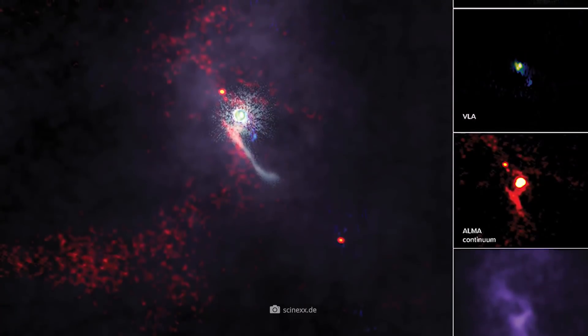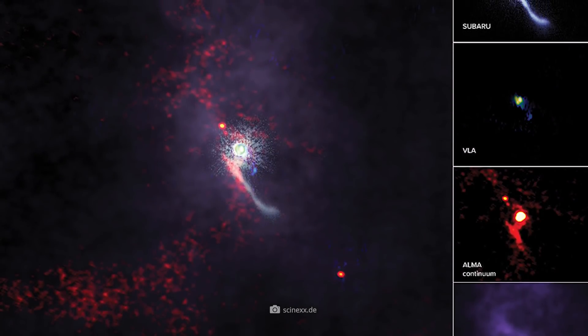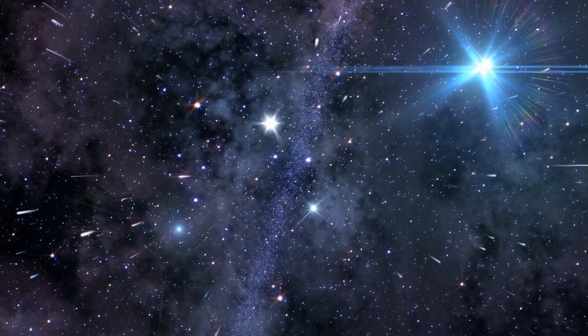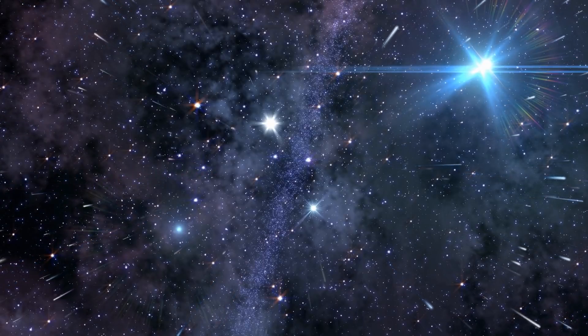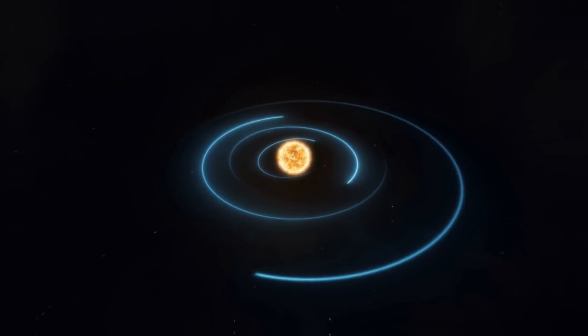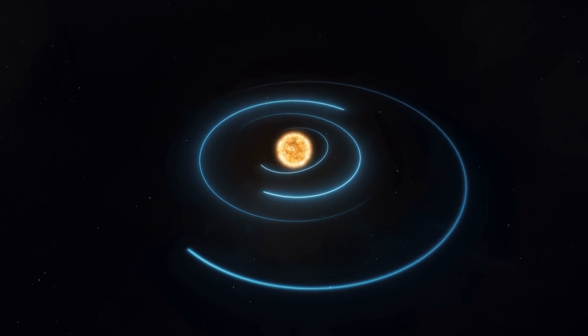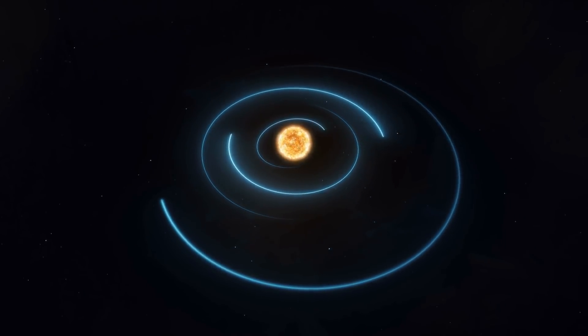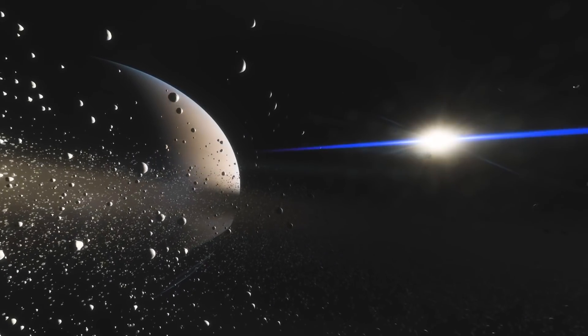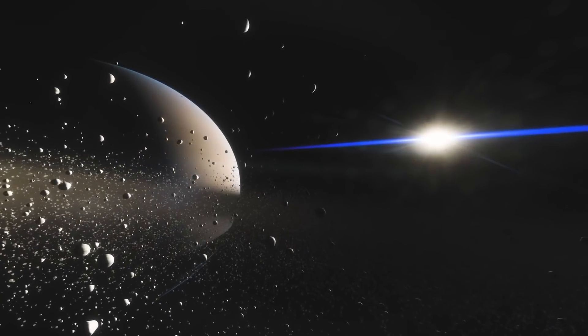Such flybys are always associated with gravitational turbulence which can fundamentally influence the further evolution of the young stars and not least their accompanying planets. Some scientific models say that such stellar passages in our solar system once changed the orbits of comets or possibly even the orbits of the outer planets.